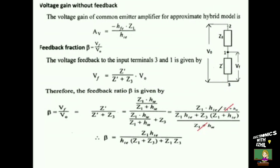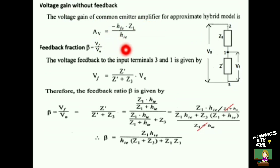Next, we will find the amplifier gain A and feedback factor beta, then equate A·beta = 1 to satisfy the required condition for oscillation. The voltage gain without feedback for the common-emitter amplifier is Av = −hfe/hie × ZL. The negative sign indicates that the amplifier produces a 180-degree phase shift.